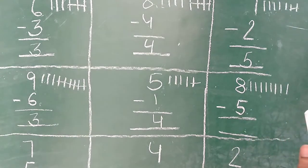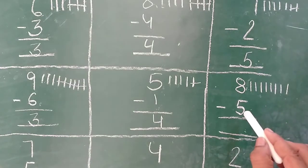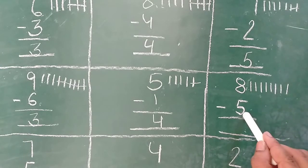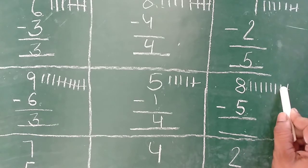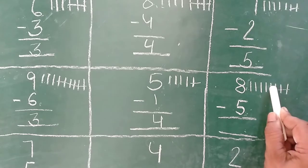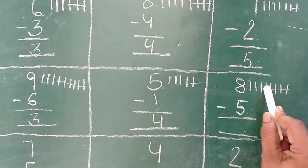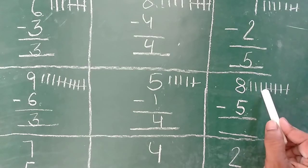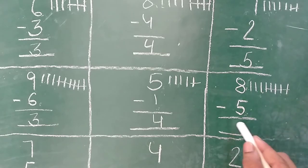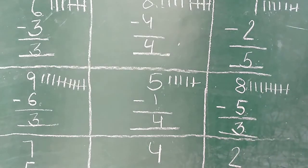Ab bata ye kya karein? Five lines cross karenge. Count karo. One, two, three, four, five. Five lines cross kar di. Ab kitni bach gai? One, two, three. Three lines. Thik hai? Answer is three.